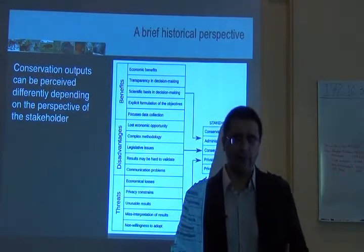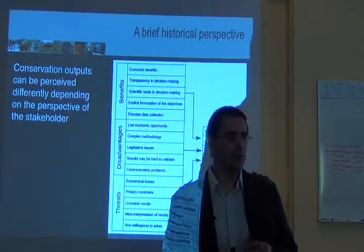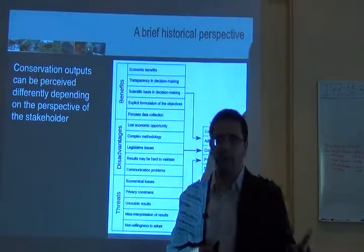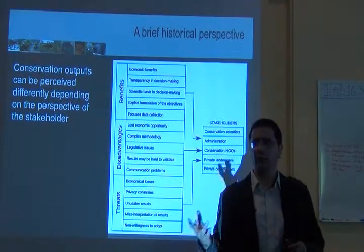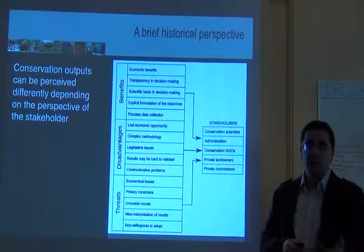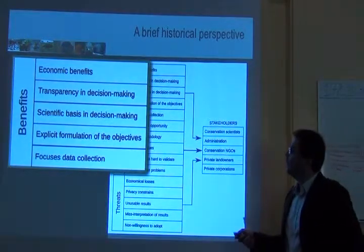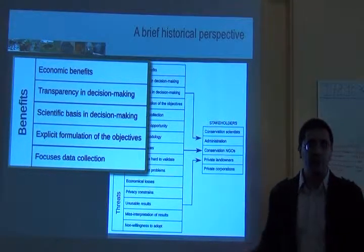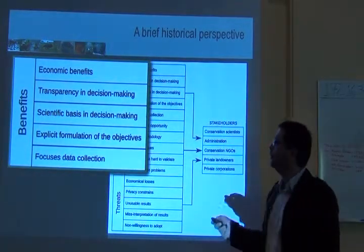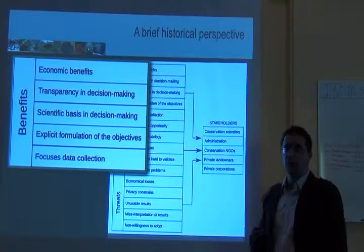Once conservation is a social science, you need all those ecological aspects of biodiversity. But you also need to engage people. The conservation outputs you have can be perceived differently depending on the perspective of stakeholders. Doing a systematic conservation plan has economic benefits because it will be cost-effective, and it brings transparency to decision-making.